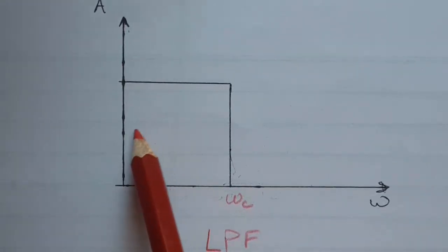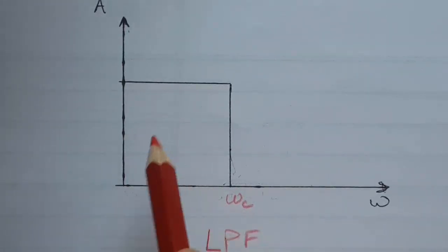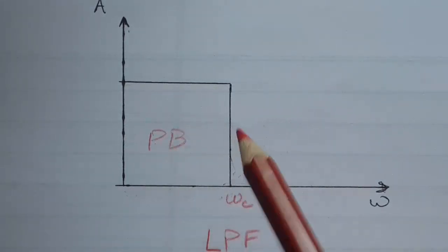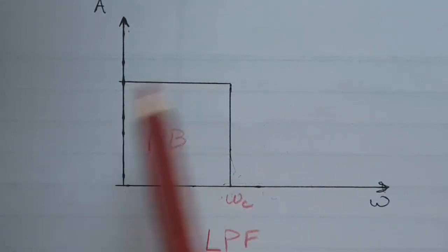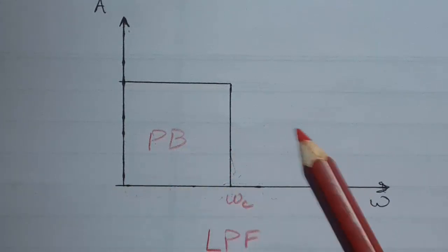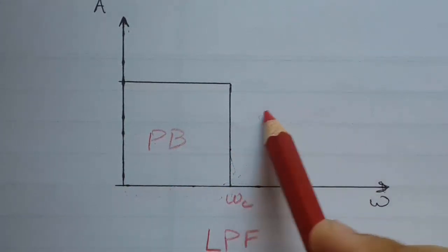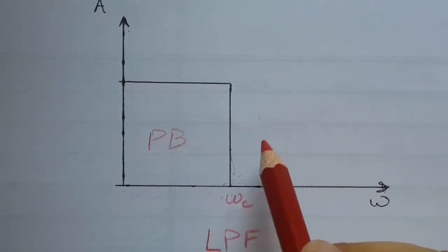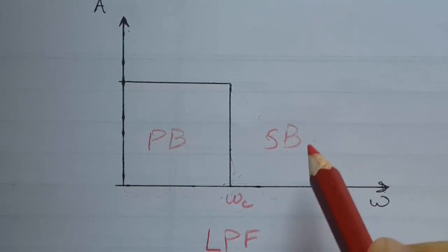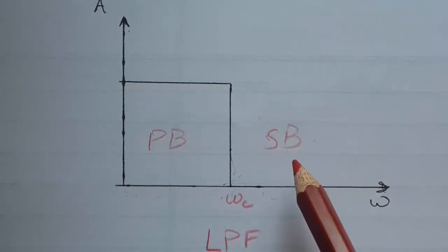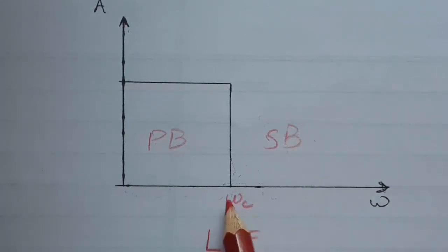This portion is called the pass band, because all the intensities in this band have been passed in the output, and this is called the stop band, because all the intensities after this frequency value have been neglected.